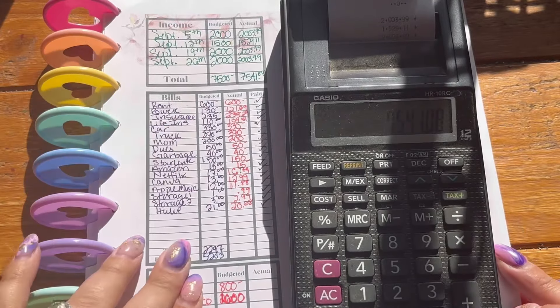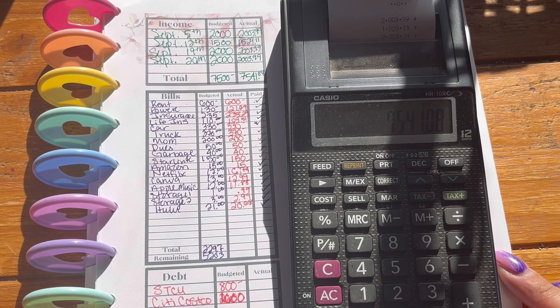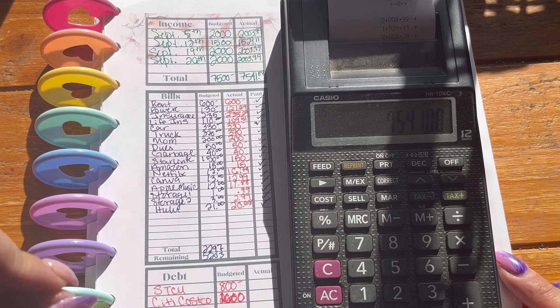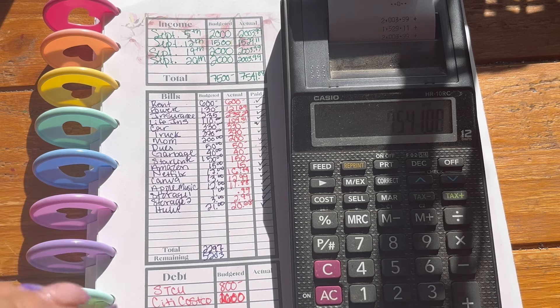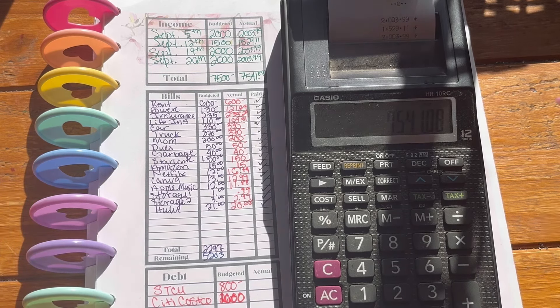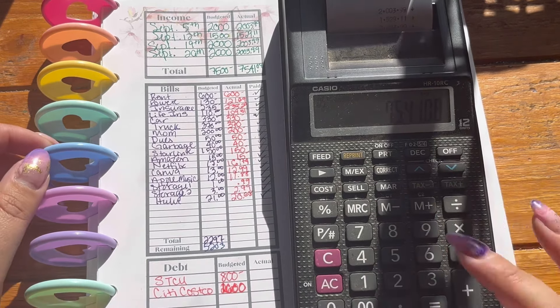Next up we have our bills. Everything did clear. Everything looks good. Now next month, and I'll put this, you'll see this in my October monthly budget. We have some bills that are going up. I got notifications that the prices are increasing. Yay. So fun. Gosh, I'm so tired of seeing things increase. Okay. Let's add up our bills and see where we came in at.